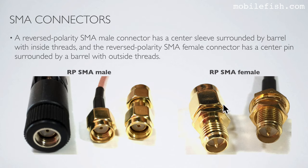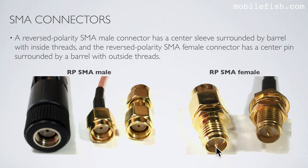Last example: first, look at the barrel — the thread is outside, which means this is an SMA female. The second step is to look at the center — the center has a pin, which means this is an RP SMA female.